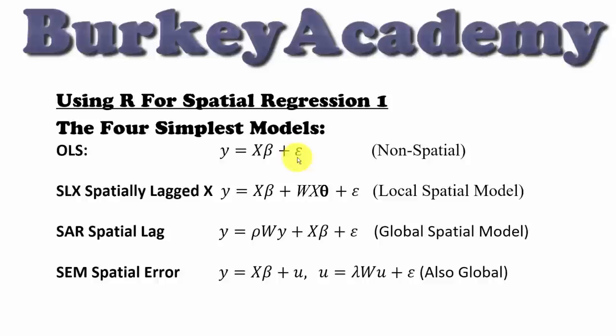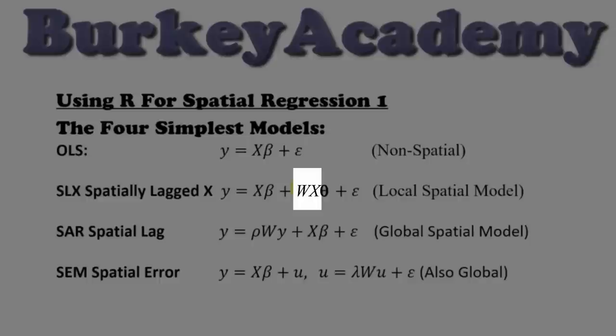OLS is y equals x beta plus epsilon, where we're assuming epsilon is just a normal stochastic error term. After testing this OLS model to see if there might be some spatial relationships we should be accounting for, we're going to run the spatially lagged x model, which adds the average value of the neighboring x's.